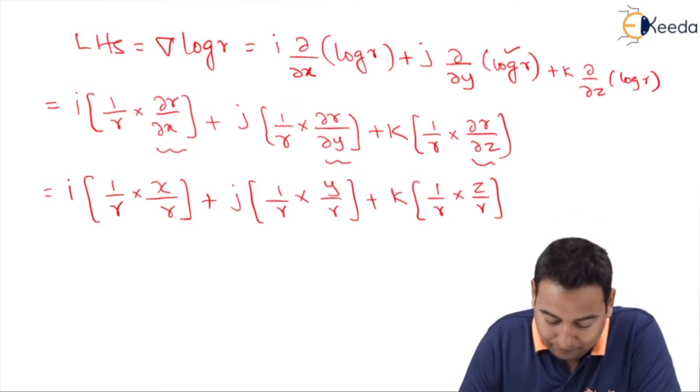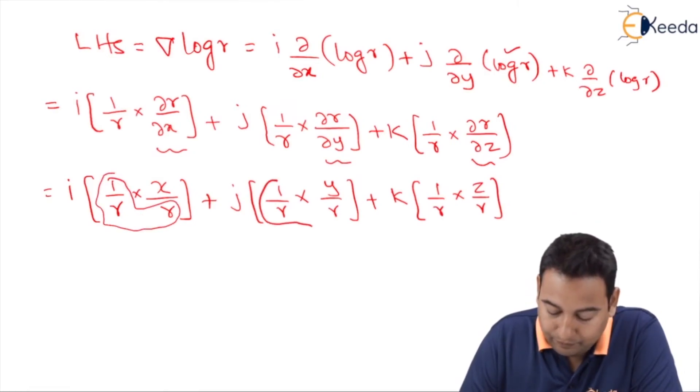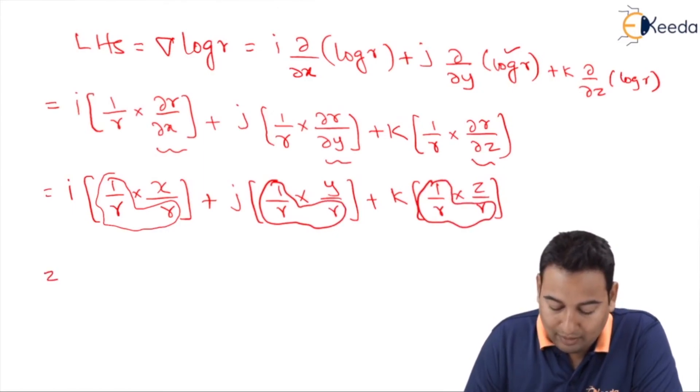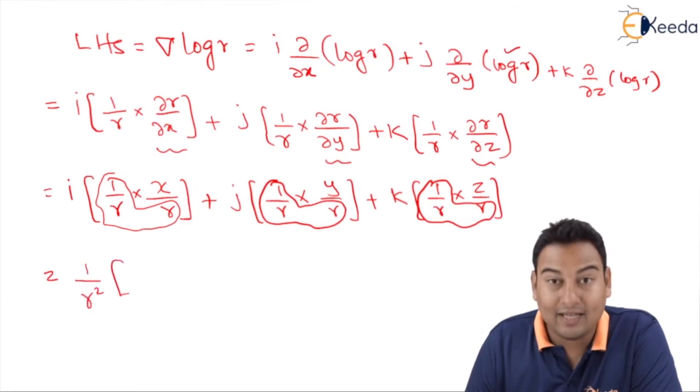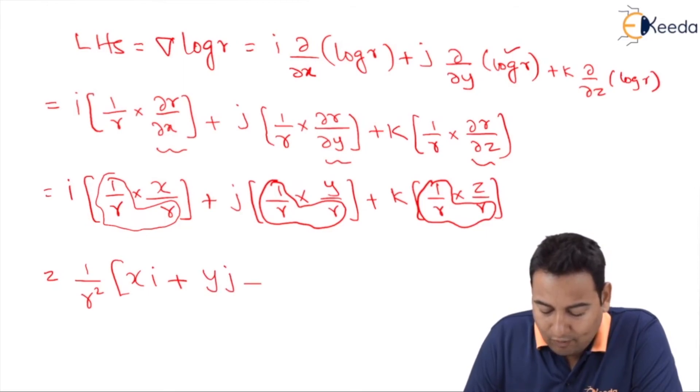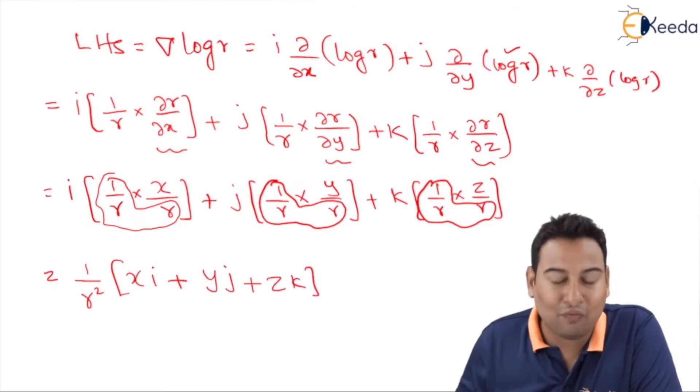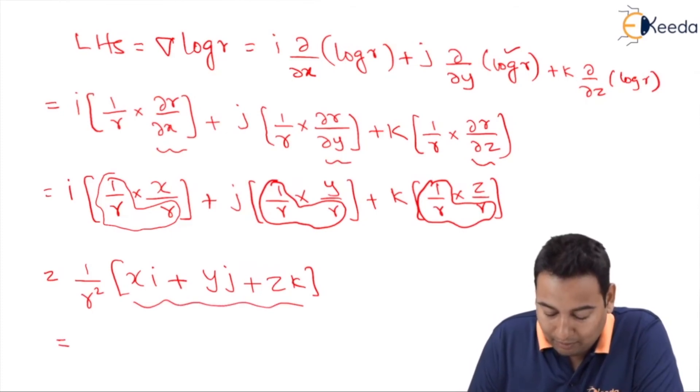This is common, let's take it out. 1 upon r square is common. Inside you will be left with the same old story: x i, y j, and z k. As discussed a number of times, this is actually your r bar.